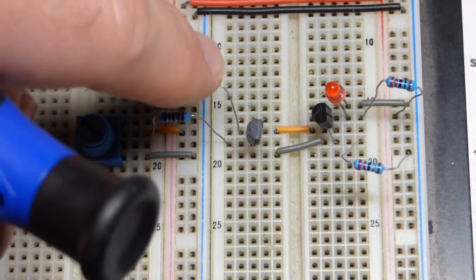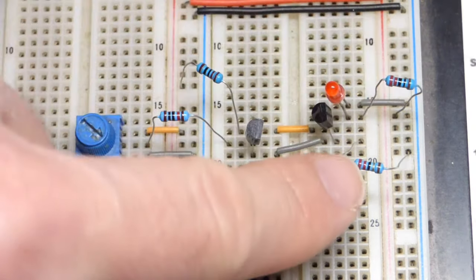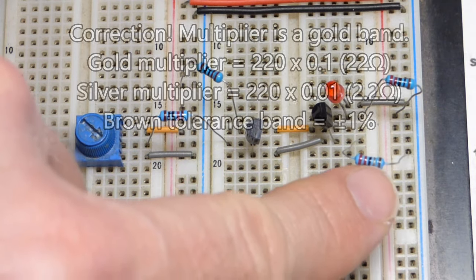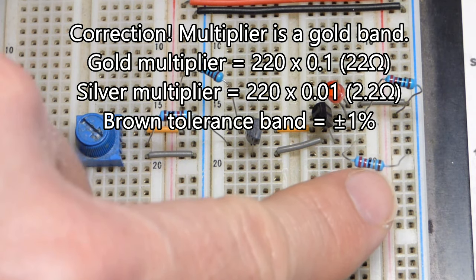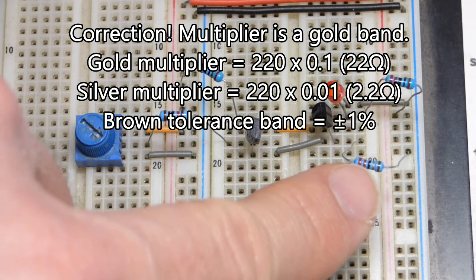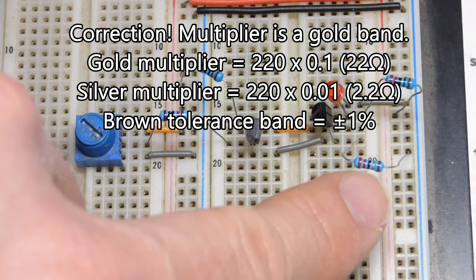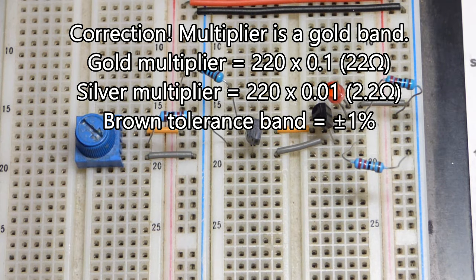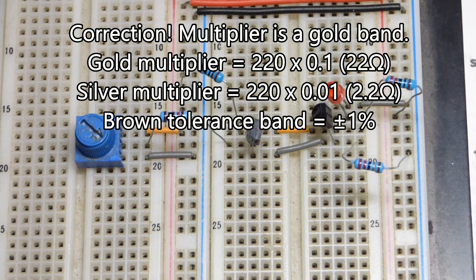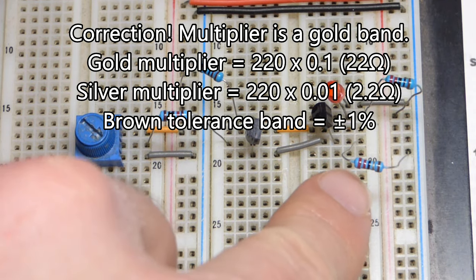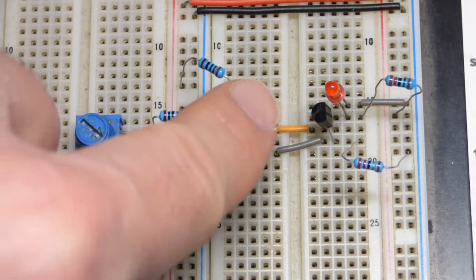And that's a 1,000 ohm resistor up there. 220, only 22. There's a little, I think that's silver right there to indicate that it's like 220. But then silver means, I believe, you times it by 0.1. So you get rid of that 0 there for just 22. Hopefully that makes sense.